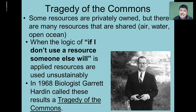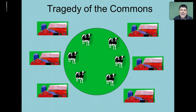In 1968, biologist Garrett Hardin called these results the tragedy of the commons. To better understand the tragedy of the commons, let's take a look at an example where we have several farms that are sharing a common pasture in which to graze their cows.